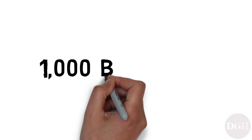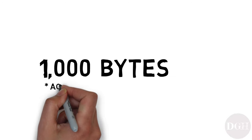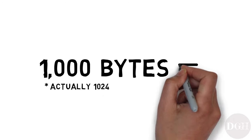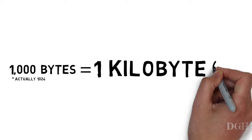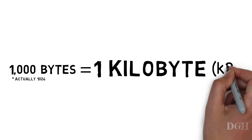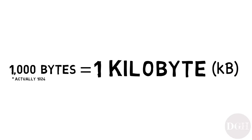If you take a thousand bytes and put them together, that's called a kilobyte, often abbreviated as KB, or just K.